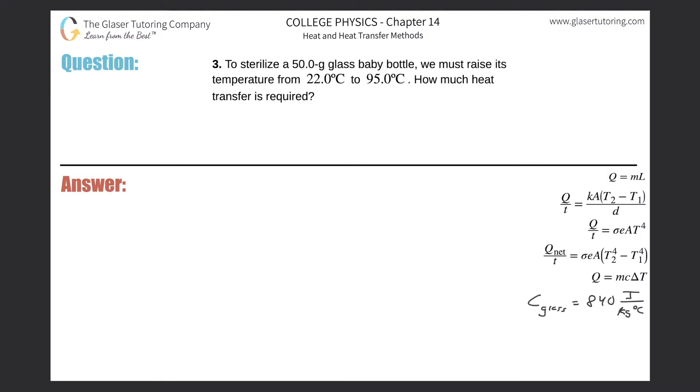Number three, to sterilize a 50 gram glass baby bottle, we must raise its temperature from 22 degrees Celsius to 95 degrees Celsius. How much heat transfer is required?